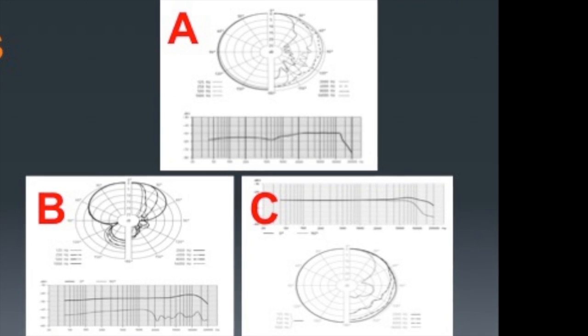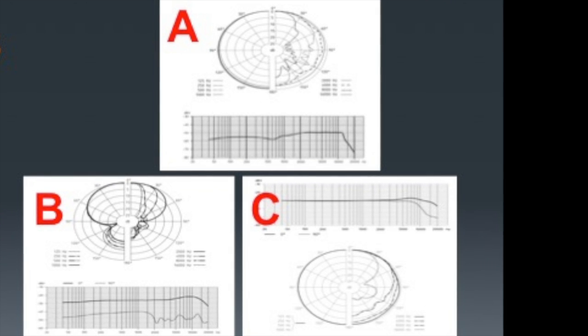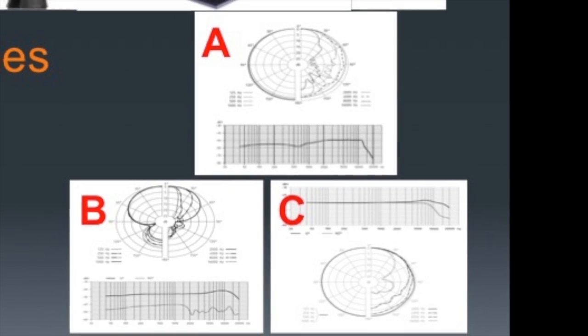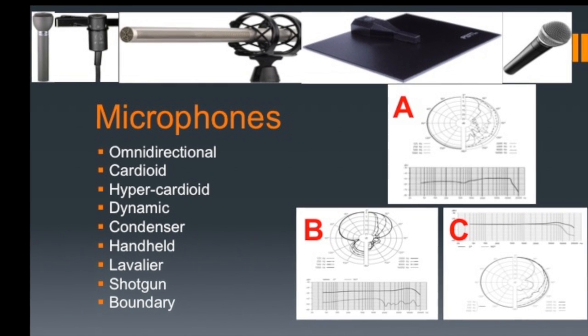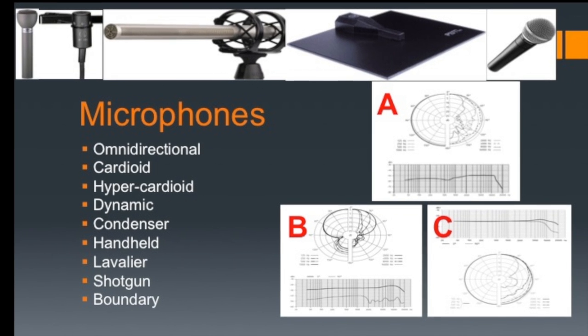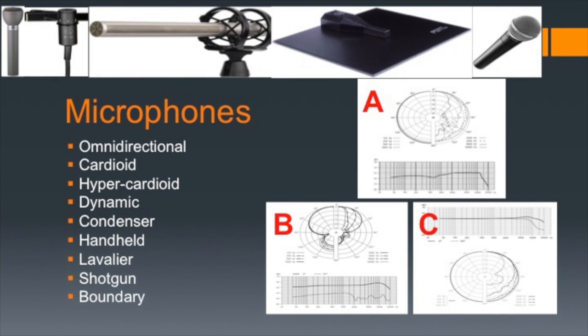Looking at the polar patterns: the one that looks most circular is an omnidirectional microphone — very omnidirectional for low frequencies and mostly omnidirectional for higher frequencies, with a very flat frequency response line. With the cardioid and hypercardioid, you see more rejection from the sides and rear, and at different frequencies the rejection changes. It's very hard to control bass frequencies regardless of direction because they're not very directional. The ElectraVoice RE-635A is a workhorse omnidirectional dynamic microphone for audio for video — pretty hard to hurt in the field.